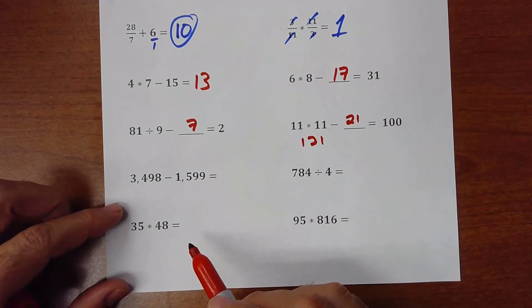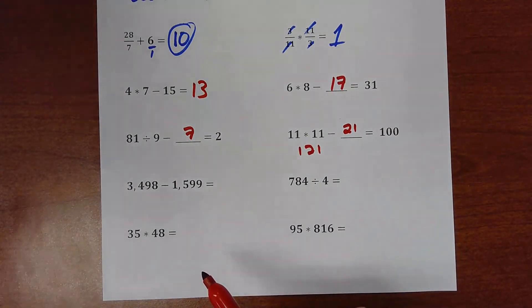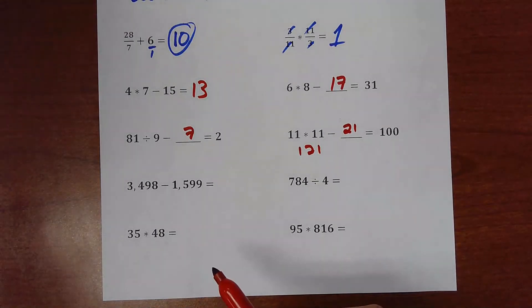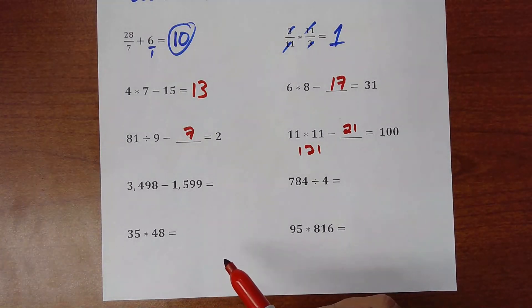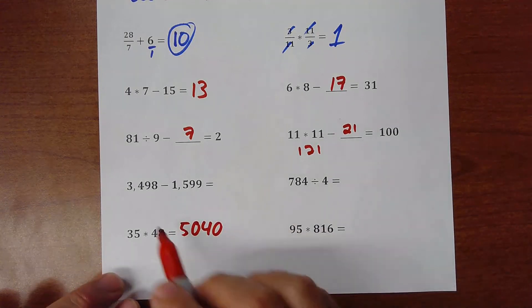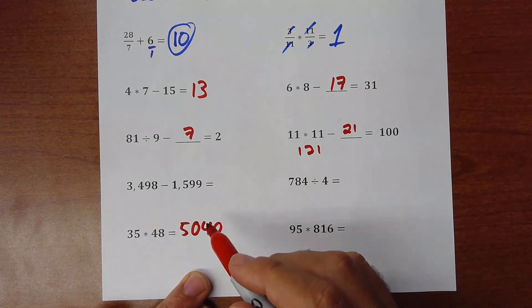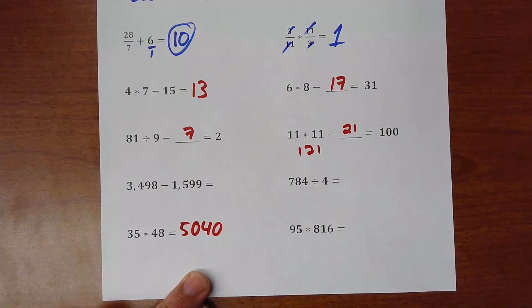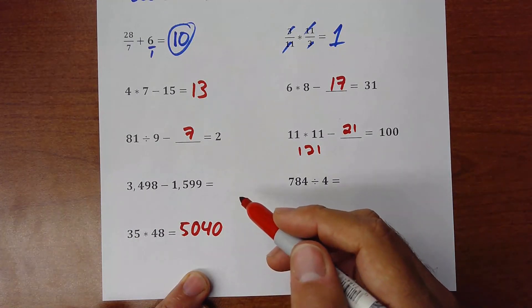So those ones, you should do it with a... You can... I mean, the idea is you do it by yourself. But I would just do it with a calculator. Because I don't want to waste the time too much. So this one would be 5040. So this one, you just subtracted.